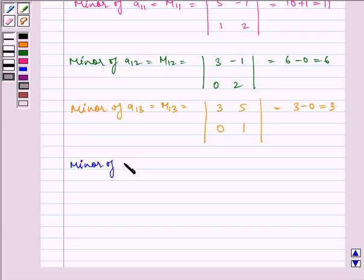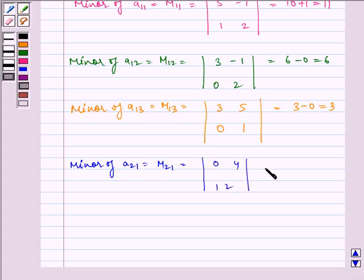Minor of A21 is equal to M21, which is equal to the determinant of 0, 4, 1, 2, which is equal to 0 minus 4, which is equal to minus 4.